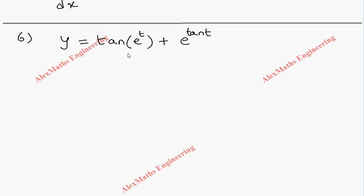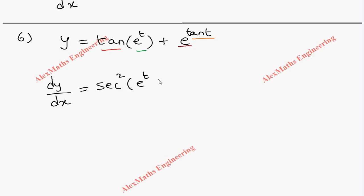Next: y = tan(e^t). Here tan is the outer function and e^t is the inner function. For the differentiation dy/dt: the differentiation of tan gives sec², so we have sec²(e^t). Then the differentiation of the inner function e^t is e^t itself. There is also a second part: y = e^(tan t), where e is the outer function and tan t is the inner function. Differentiating: e^(tan t)·sec²(t), since the differentiation of tan t is sec²(t).